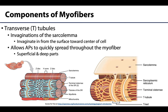In certain areas of the sarcolemma, it will invaginate — kind of tunnel its way deep in from the surface toward the center of the muscle. These invaginations are called transverse or T-tubules. These structures allow the muscle action potential to propagate or spread widely and quickly throughout the muscle fiber — not only along the superficial sarcolemma, but also down through the T-tubules to the deeper portions of the cell.